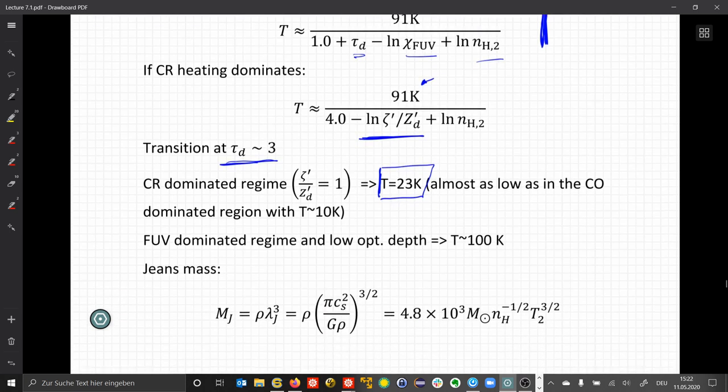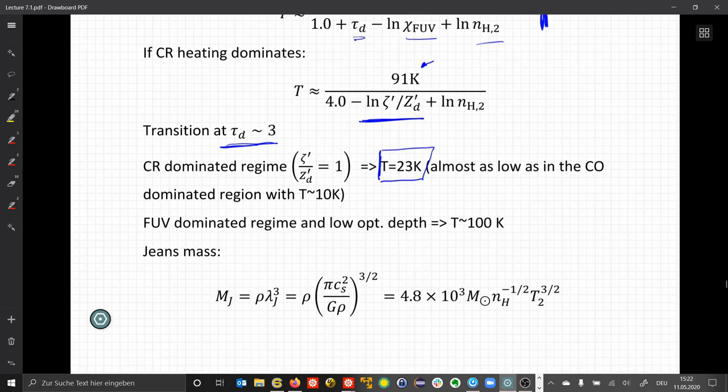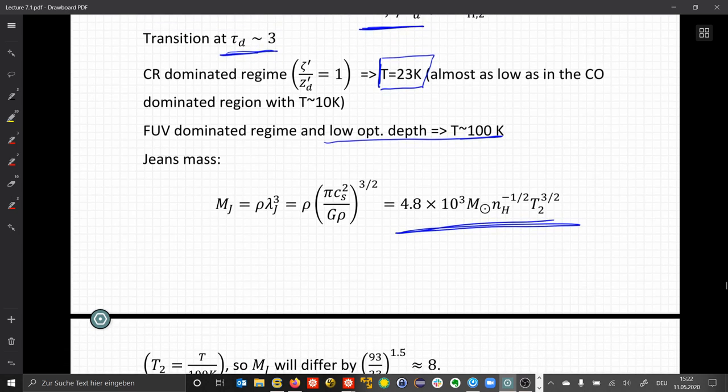When we are in the FUV dominated regime and at low optical depth, then we find temperatures in the order of 100 K. And we already learned that when we have the temperature and the densities, we can figure out the Jeans masses. So that's the mass over which a volume of gas turns gravitationally unstable. At 100 Kelvin and the density of 100 particles per cubic centimeter, this is about 5000 solar masses.